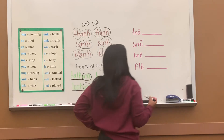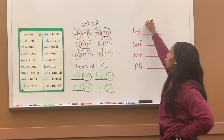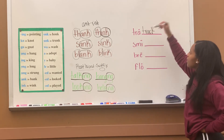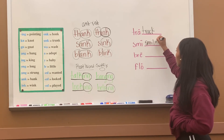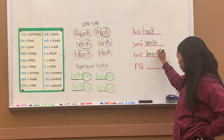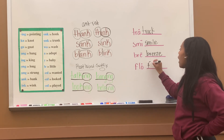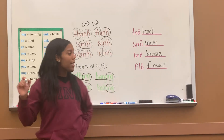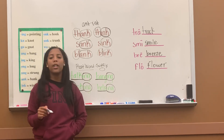Next we have some blends — let's make some words. I have 'tr' — track, trash, or trap. Then 'sm' — smile. And 'br' — breeze. Also 'fl' — flower, flock, or flaw. All right, so that's it. We covered the special sounds 'ank' and 'ink,' reviewed root words and suffixes, and created some blend words. You can now do workbook page 58.